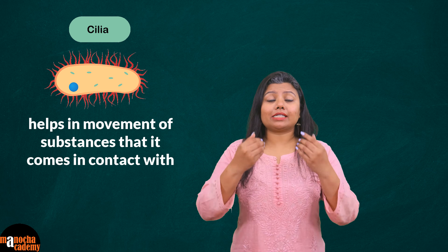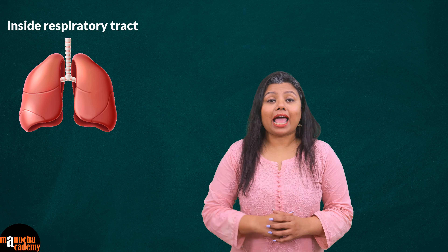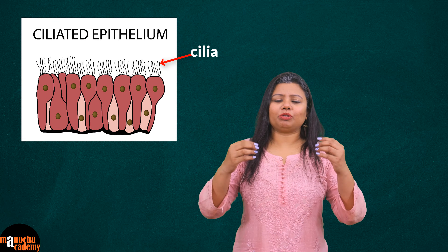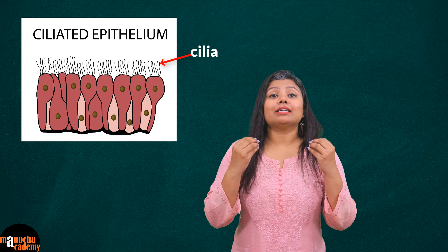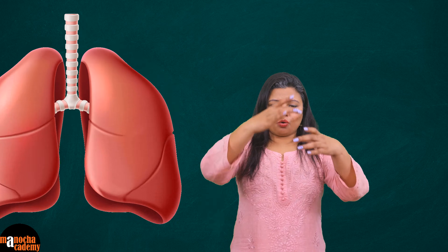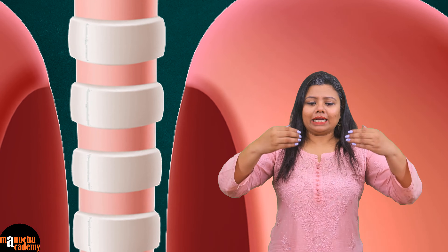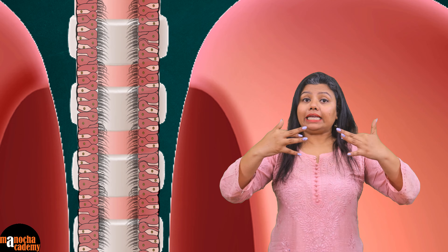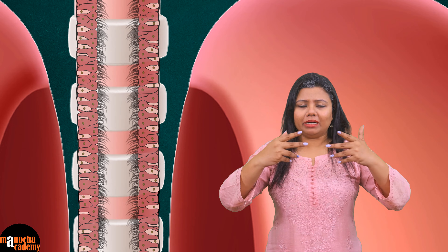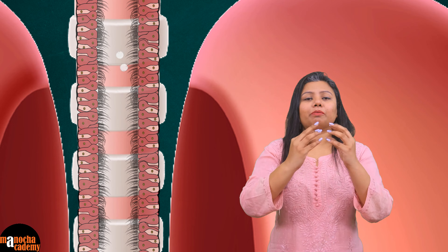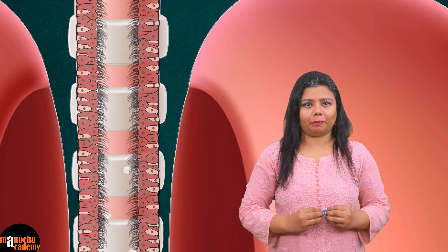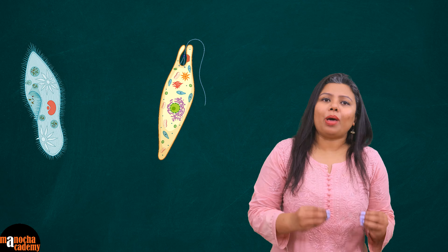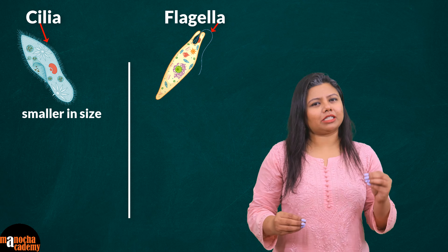Cilia can help in movement of substances they come in contact with. For example, inside our respiratory tract and inside the fallopian tube of females, there are ciliated epithelial cells. In a tubular organ where the inner lining is surrounded by cells provided with cilia, the cilia carry out movement that helps substances pass through the tube.